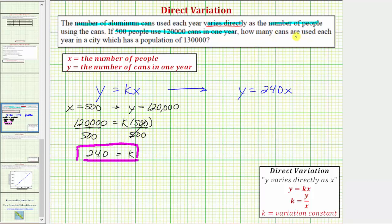Our question is, how many cans are used each year in a city that has a population of 130,000? So, we're given the x value, we need to determine the corresponding y value. So, we know x equals 130,000. We need to determine the corresponding y value.